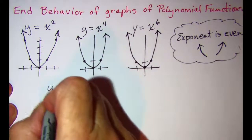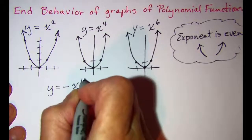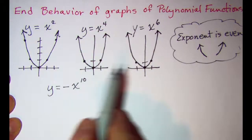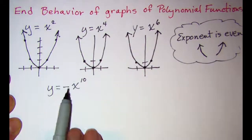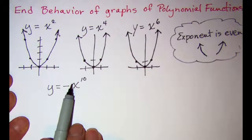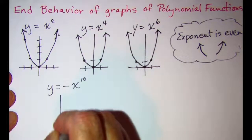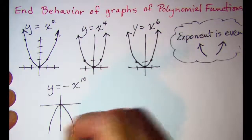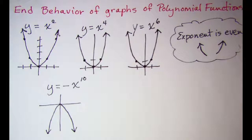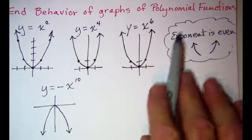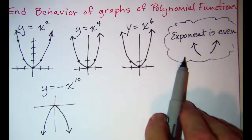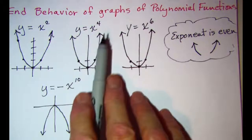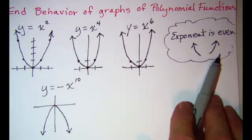If I look at y equals negative x to the tenth power, we have an even exponent, so I know that the ends are both going to be pointed in the same direction. But because my coefficient is negative, I will reflect the graph across the x-axis, so the graph is going to look like this. So when looking at polynomial functions, if the function behaves like y equals x to an even power, the end behavior will be both arms up or both arms down.